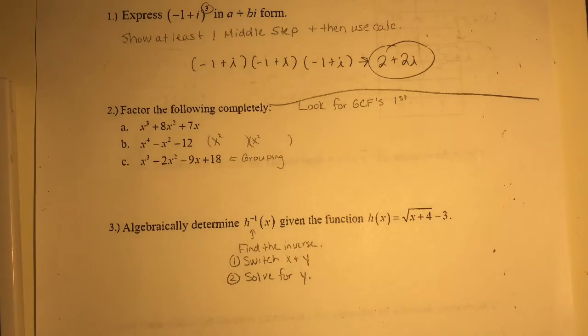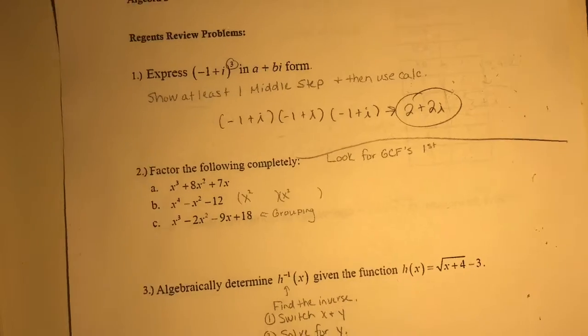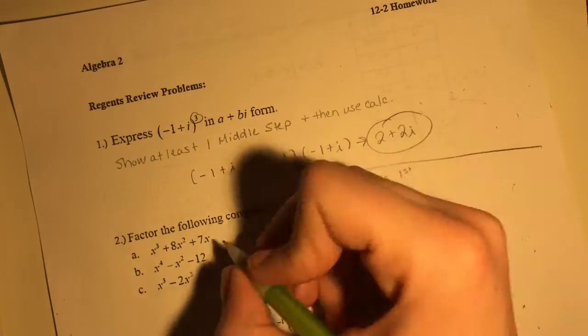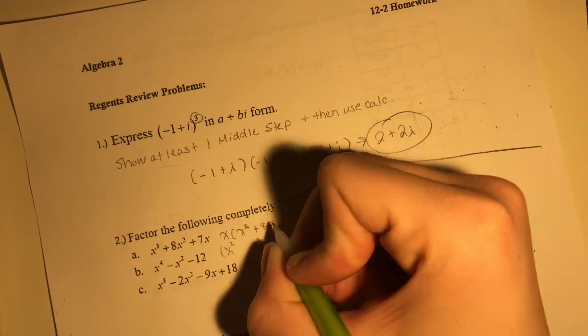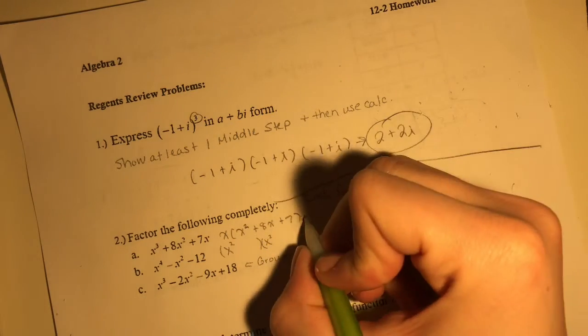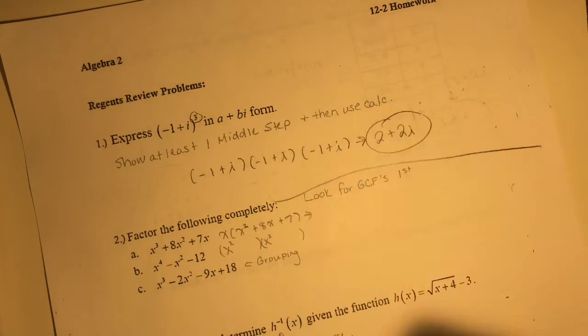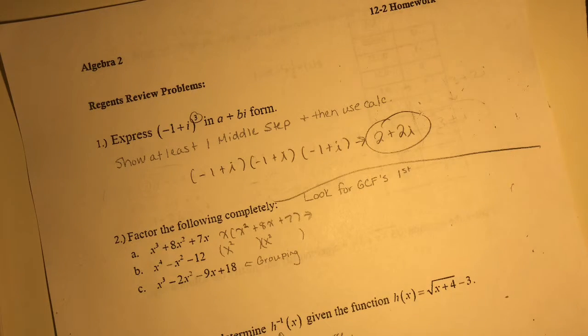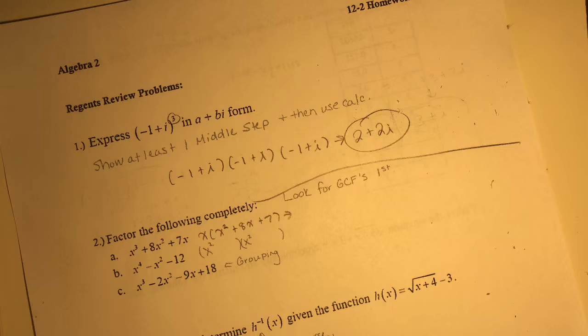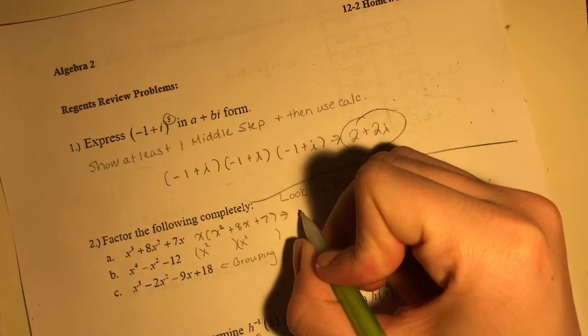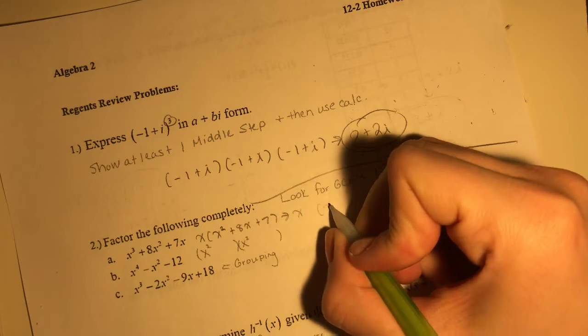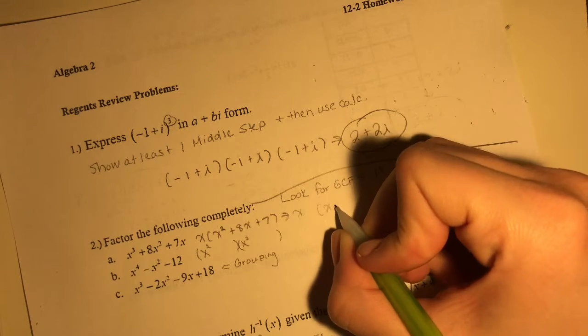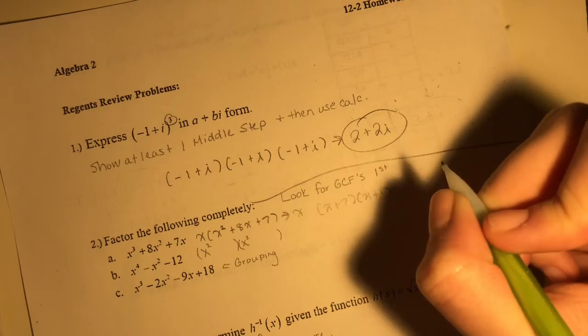Next question. Factor the following completely. Okay, so for a we can just factor this x out. We have x squared. Okay, so we still have some more factoring to go. So if we use that amazing ac or ez method, 7 times x, we get 7. So 7 times 1, 7 plus 1 gives us 8. So we have now, let's put that x on the side right over here. We have x plus 7. I think x plus 1 gives us that.